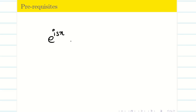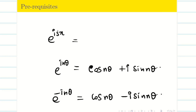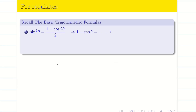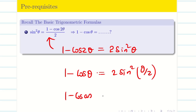Before going to the problem we need some prerequisites. e^(isx) is expressed using Euler's formula: e^(inθ) = cos(nθ) + i sin(nθ), and e^(−inθ) = cos(nθ) − i sin(nθ). So e^(isx) = cos(sx) + i sin(sx). Also important: cos(2θ) = 1 − 2sin²θ = 2cos²θ − 1, so 1 − cos(2θ) = 2sin²θ, and 1 − cos(θ) = 2sin²(θ/2). If we have 1 − cos(as), it equals 2sin²(as/2).